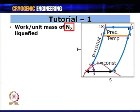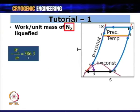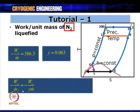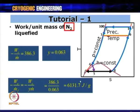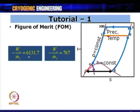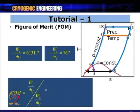Work per unit mass of gas liquefied: −WC/m_dot_f = (−WC/m_dot)/y = 386.3/0.063 = 6131.7 J/g. This is significantly lower than the simple Linde-Hampson value of 9475 J/g, justifying the use of pre-cooling. Figure of merit FOM = 767/6131.7 = 0.125 for the pre-cooled cycle.